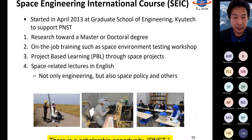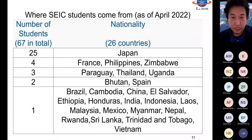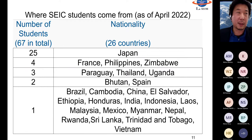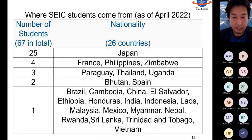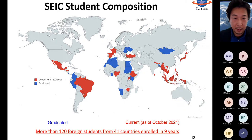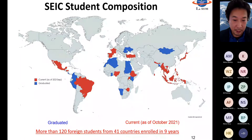As of April 2022, there are 26 nationalities represented in SEIC. Of 67 students total in the course, only 25 are Japanese — all others are coming from overseas, from all over the world. Looking at the record of graduated and current students, more than 120 foreign students have come over these eight or nine years from 41 countries. Through this international experience, we received the Airbus Diversity Award in 2017.